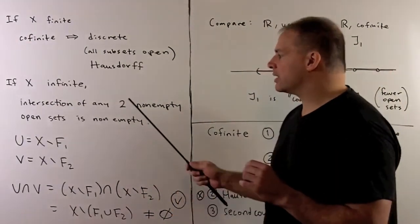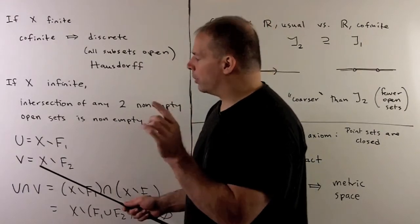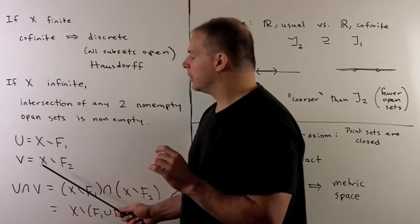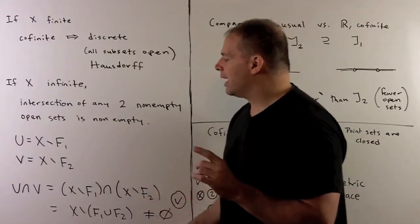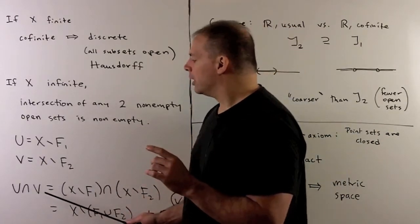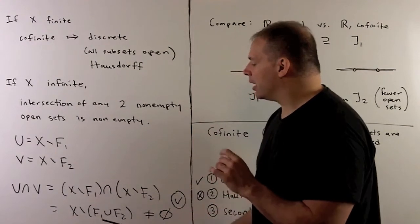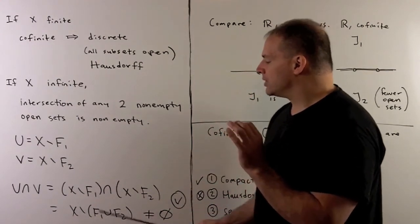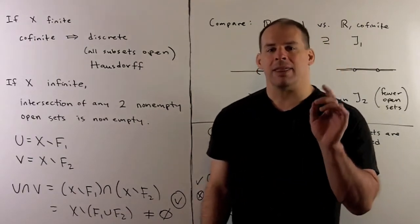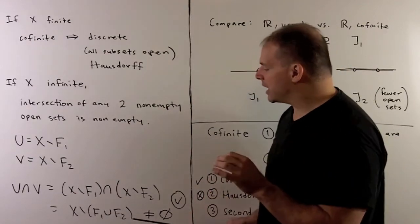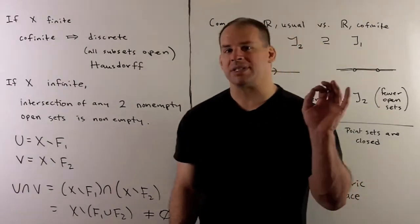To see this, let's take two non-empty open subsets U and V. So they're complements of the finite subsets F1 and F2. If we take their intersection, we can write that as a complement of F1 union with F2. Since X is infinite, F1 union F2 is finite. That means this subset is infinite, so it's non-empty.